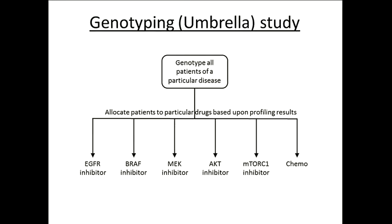So how are we going to do those clinical trials? There are really two main approaches. One I call a genotyping study — also called an umbrella study or the MATCH study or microallocation study. Really you take one cancer, for example lung cancer, profile all the patients with that disease, and then allocate them to different arms depending upon what mutations they have.